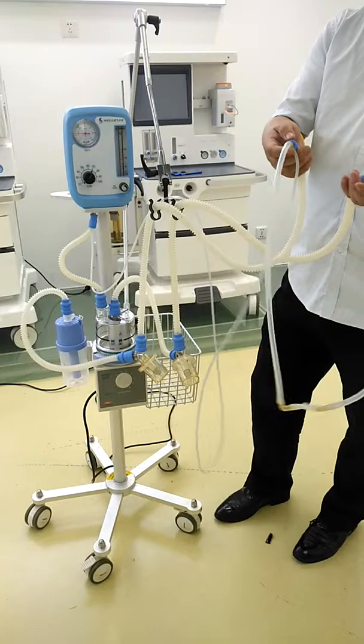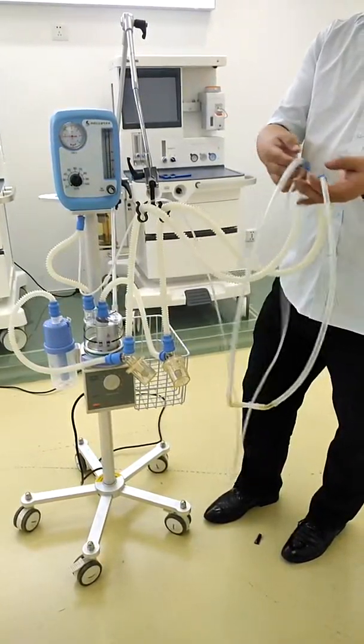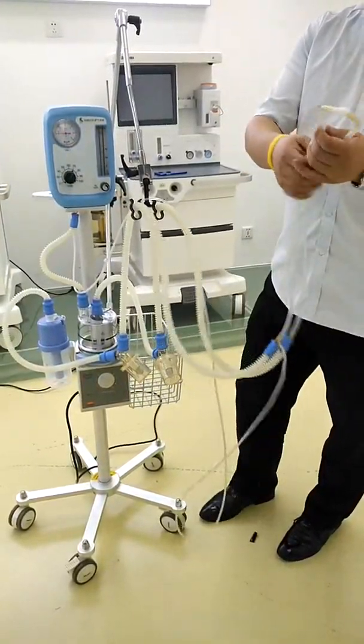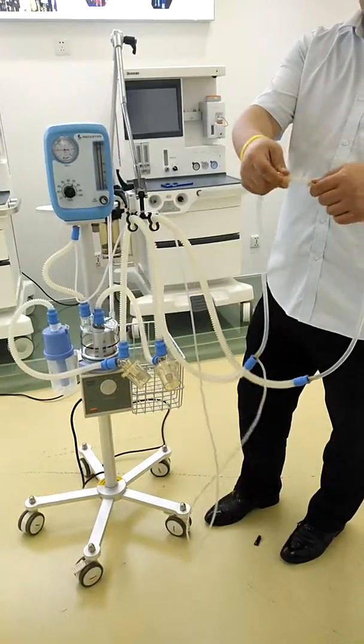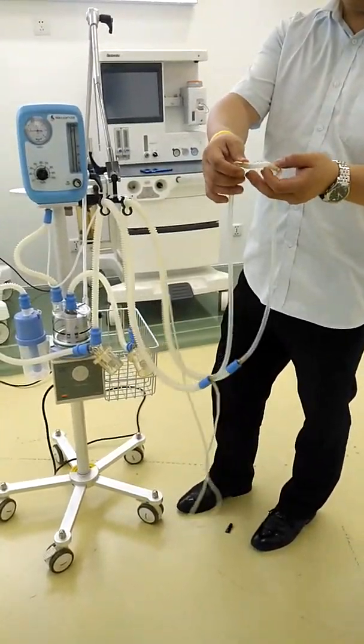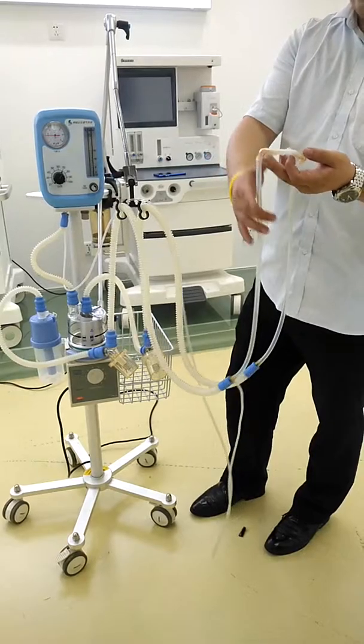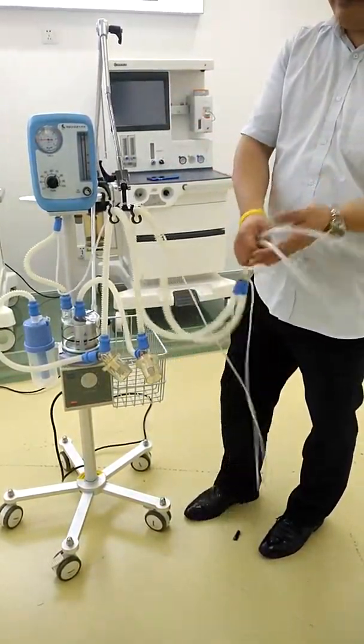Here we're using a nasal prong to connect with two long pipelines. On the front here is the nasal prong, which we can place on the baby's nose with a head cap to make it very tight for the baby to breathe more comfortably.